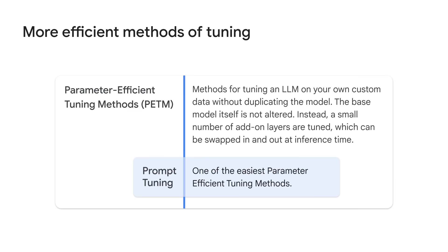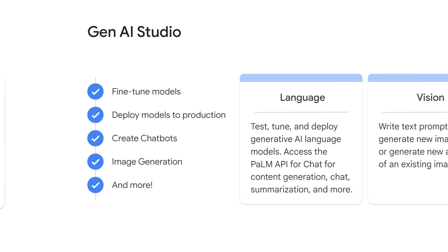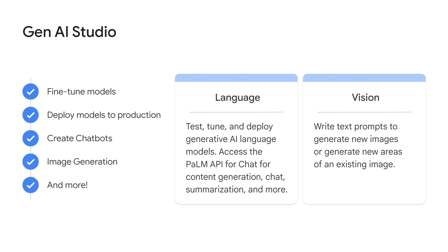Generative AI Studio lets you quickly explore and customize generative AI models that you can leverage in your applications on Google Cloud. Generative AI Studio helps developers create and deploy generative AI models by providing a variety of tools and resources. For example, there is a library of pre-trained models, a tool for fine-tuning models, a tool for deploying models to production, and a community forum for developers to share ideas and collaborate.